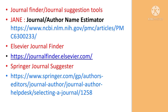Now let's understand journal finder or journal suggestion tools. The first is Jane — Journal Author Name Estimator — accessible at the website given on the slide. The next is Elsevier Journal Finder, available by searching Google. The last is Springer Journal Suggester, which suggests a list of journals where you can publish your papers.